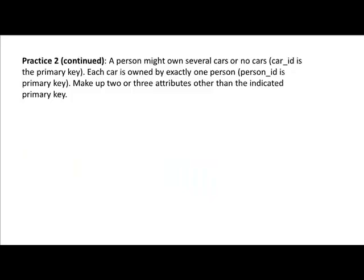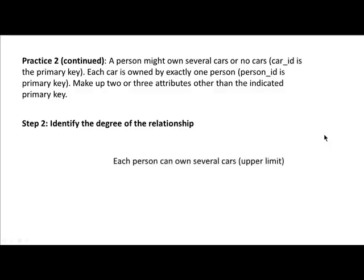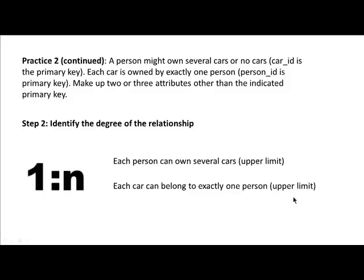Step two: identify the degree of the relationship — is it one-to-one, one-to-many, or many-to-many? When talking about degree, you're considering the upper limit. Consider each entity type in turn: one person can own at most how many cars, and one car can be owned by at most how many persons? Each person can own several cars, and each car is owned by exactly one person. That upper limit means it cannot be owned by more than one person. Therefore, this is a one-to-many relationship.